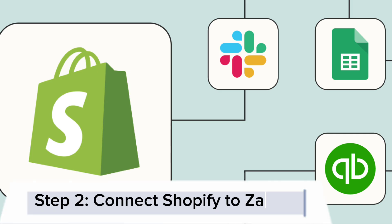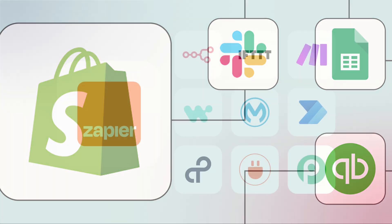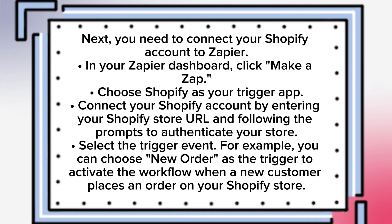Step 2: Connect Shopify to Zapier. Next, you need to connect your Shopify account to Zapier. In your Zapier dashboard, click Make a Zap and choose Shopify as your trigger app. Connect your Shopify account by entering your Shopify store URL and following the prompts to authenticate your store. Select the trigger event — for example, you can choose New Order as the trigger to activate the workflow when a new customer places an order on your Shopify store.